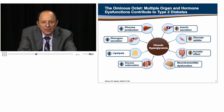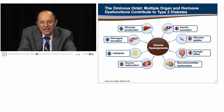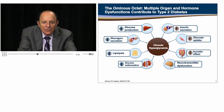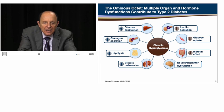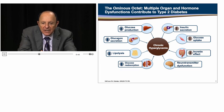In the kidney, the plasma glucose concentration at which glucose spills into the urine — called the renal threshold for glucose — is increased in type 2 diabetes, resulting in decreased urinary glucose excretion. Fat cells contribute to elevated plasma free fatty acid levels, causing beta cell failure and aggravation of insulin resistance in muscle and liver. Finally, insulin resistance in the brain contributes to increased food intake in obese patients with type 2 diabetes.